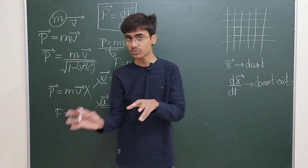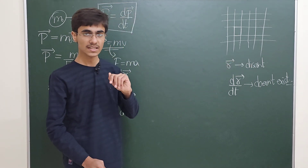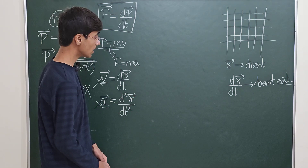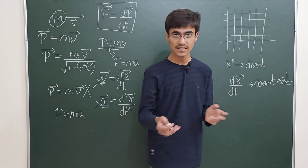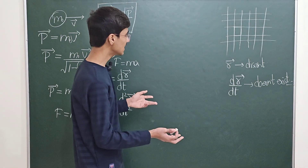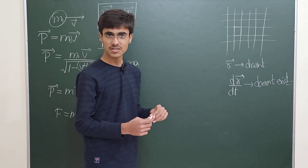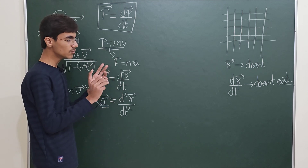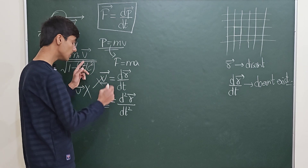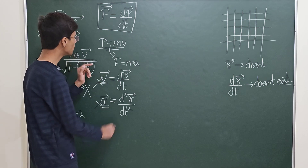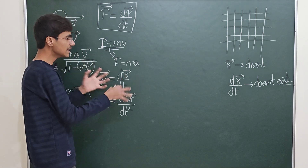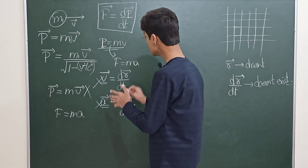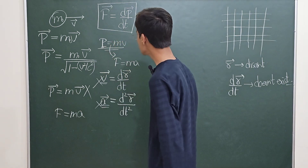Instead, you treat momentum as its own variable — its own observable — that exists independently. You write Newton's second law in terms of this particular variable and carry out all calculations. In quantum physics, when we say momentum, we actually mean the momentum operator, because in quantum physics we deal with operators rather than definite classical values.